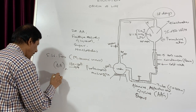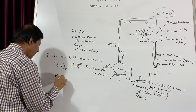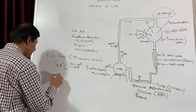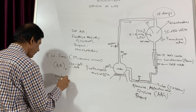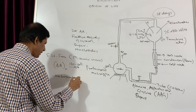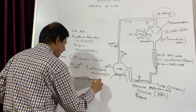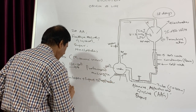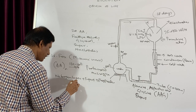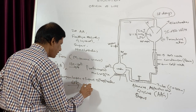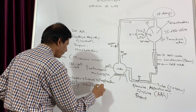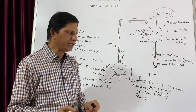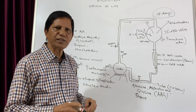Similarly, when nitrogen bases, sugars, and phosphates were given a temperature of 60 degrees centigrade, then nucleotides were formed. That means actually in the primitive Earth, all these things have been formed. That is the experiment carried out by Stanley Miller and Harold Urey - they conducted the experiment in Chicago.